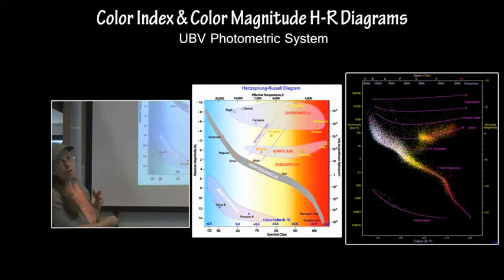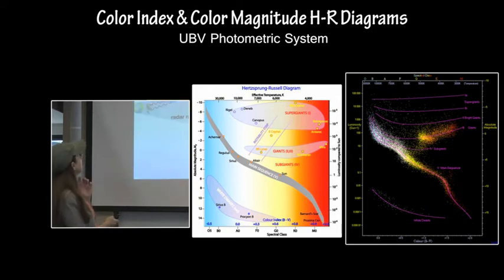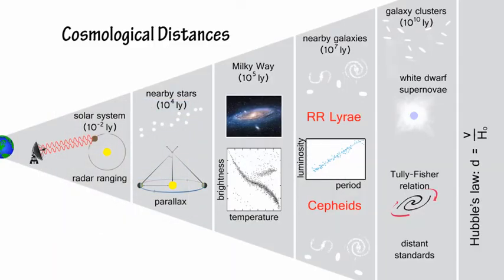Make sure you know what units are on the axes of the H.R. diagrams. R.R. Lyrae and Cepheid variables are very periodic, and they can be plotted on a luminosity-period relationship. They can be used to determine cosmological distances in the Universe to nearby galaxies.